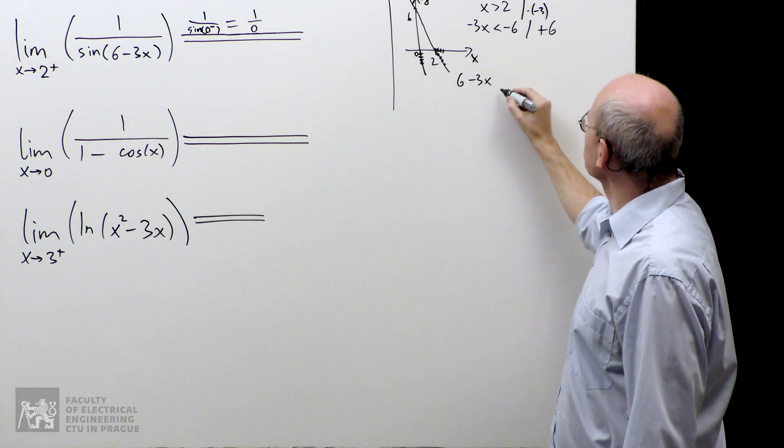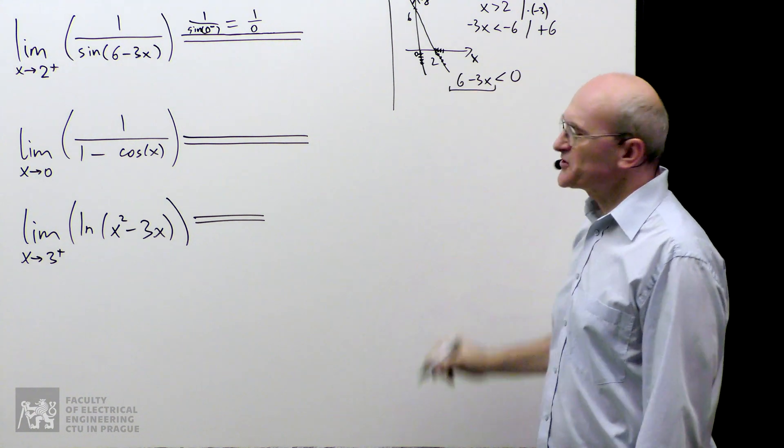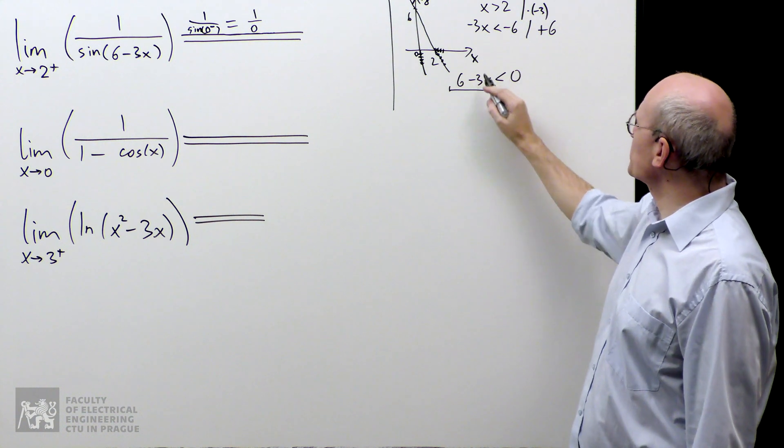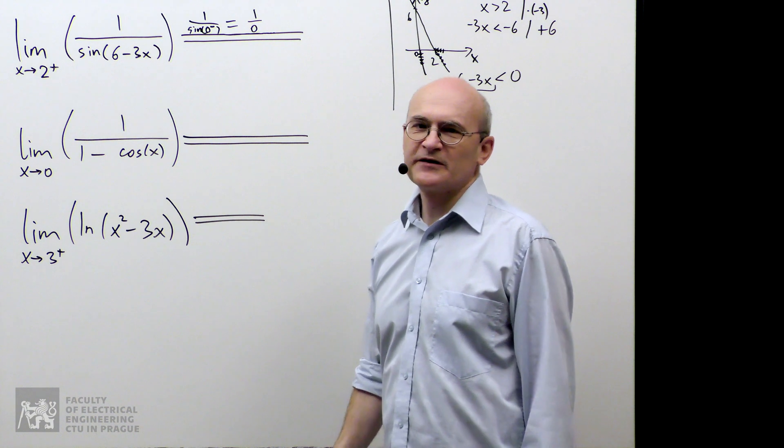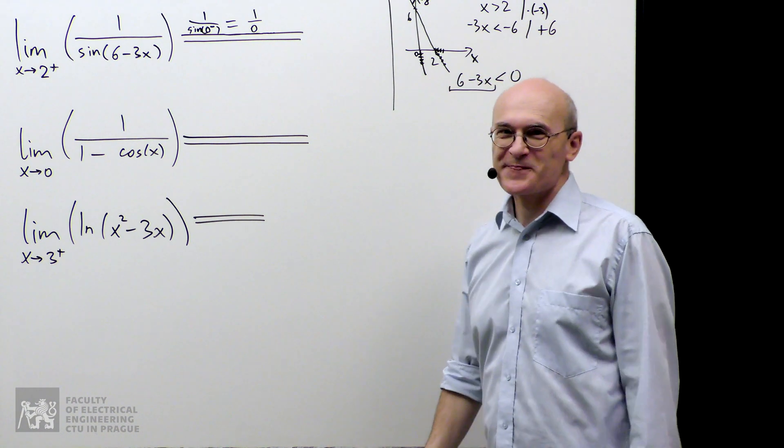6 minus 3x is less than 0. That's the expression I am investigating, and I can see that as I'm approaching 2 from the right, this expression is negative. So indeed, this 0 is negative. We have double confirmation, we are slowly beginning to believe it.